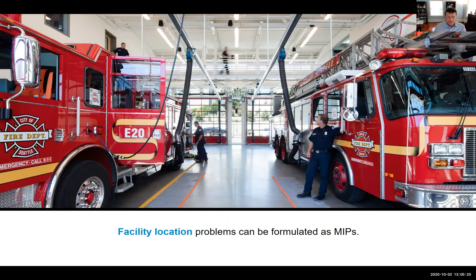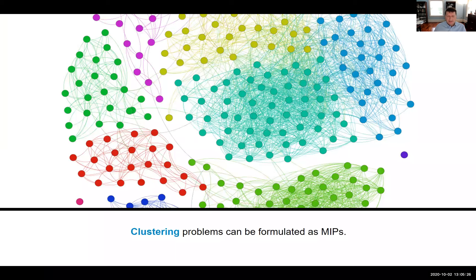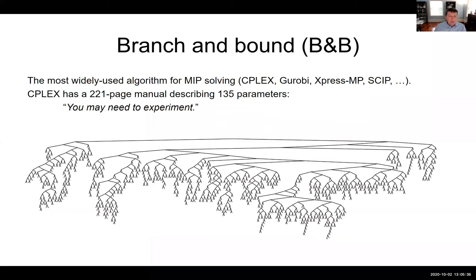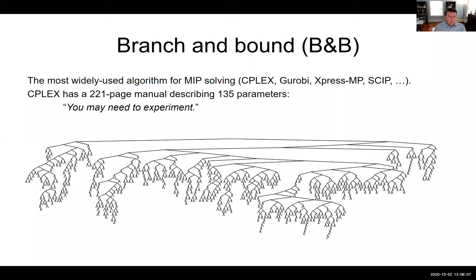Facility location problems can also be formulated as MIPs, and our papers in the second part benchmark on those. Clustering problems as well. Noisy binary classification problems can be formulated as MIPs and we'll benchmark on those later in the talk. Branch and bound is the most widely used algorithm for combinatorial optimization and MIP solving. Solvers like CPLEX, Gurobi, ExpressMP, and SCIP all use it. CPLEX has a 221-page manual describing 135 parameters, and they say that you may need to experiment — indeed, parameter settings make a huge difference in performance.